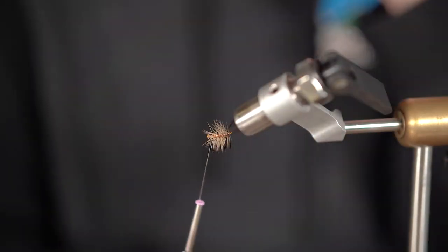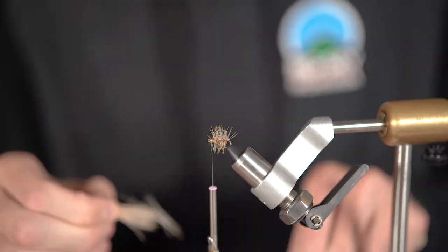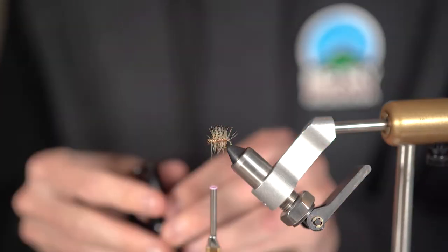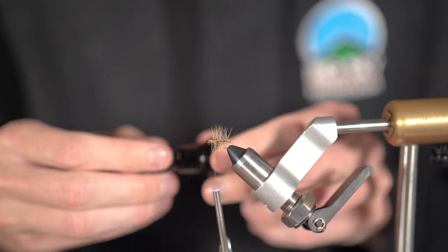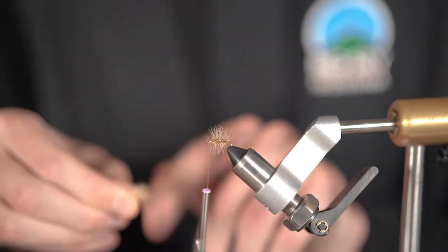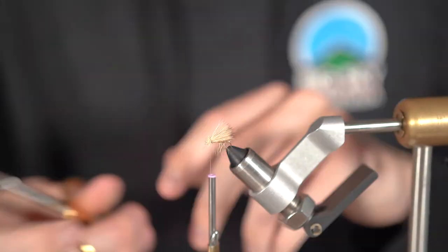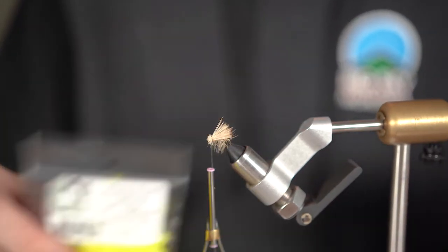Now comes the fun part. Grab out the patch of elk hair and cut off a patch about half the circumference of a number 2 pencil. Give it a few good taps and grab out the pinch of hair firmly, flicking off all of the stragglers and non-uniform hairs. Cut that pinch of hair to the length of the shank of the hook and firmly set that pinch onto the shank just before the eye of the hook. Give it one or two wraps then crank down with a few more.